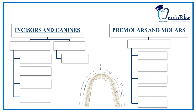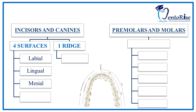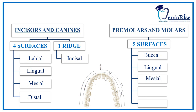Thus, for incisors and canines, we have four surfaces and one ridge. The four surfaces are: the labial surface facing towards the lips, the lingual surface facing towards the tongue, the mesial surface facing towards the midline, and the distal surface facing away from the midline — and one ridge, that is the incisal ridge. For premolars and molars, we have five surfaces: the buccal surface facing towards the cheeks, the lingual surface facing towards the tongue, the mesial surface facing towards the midline, the distal surface facing away from the midline, and the occlusal surface coming in contact with the opposite teeth during occlusion.